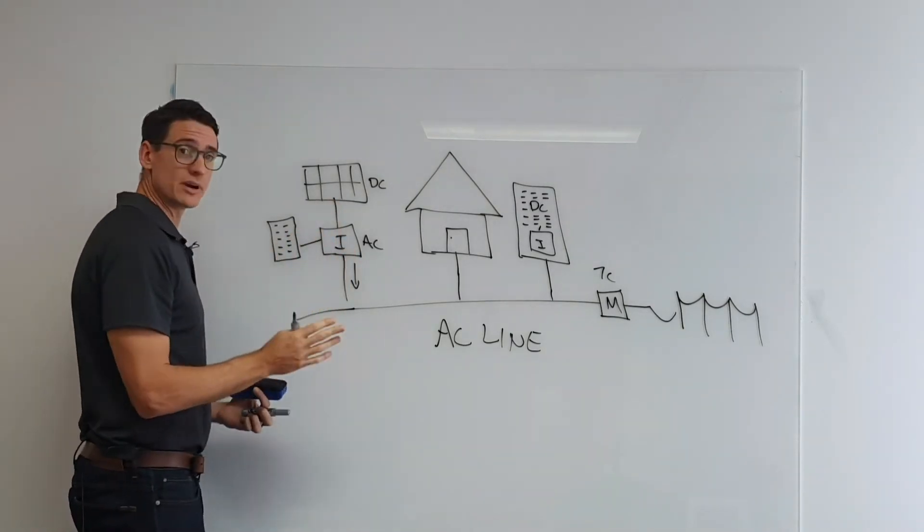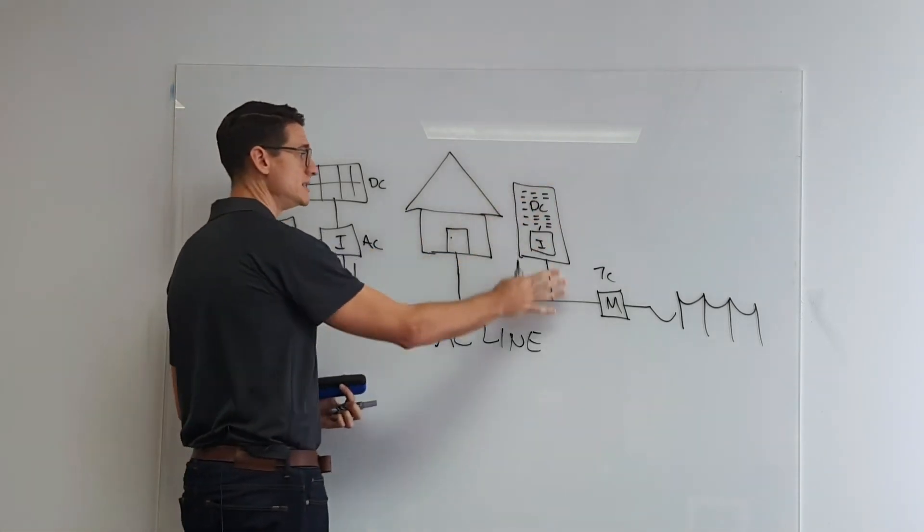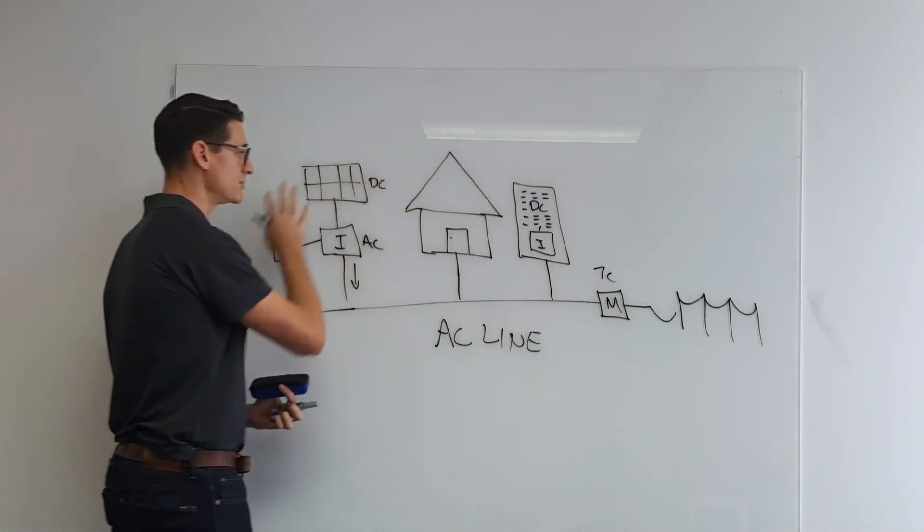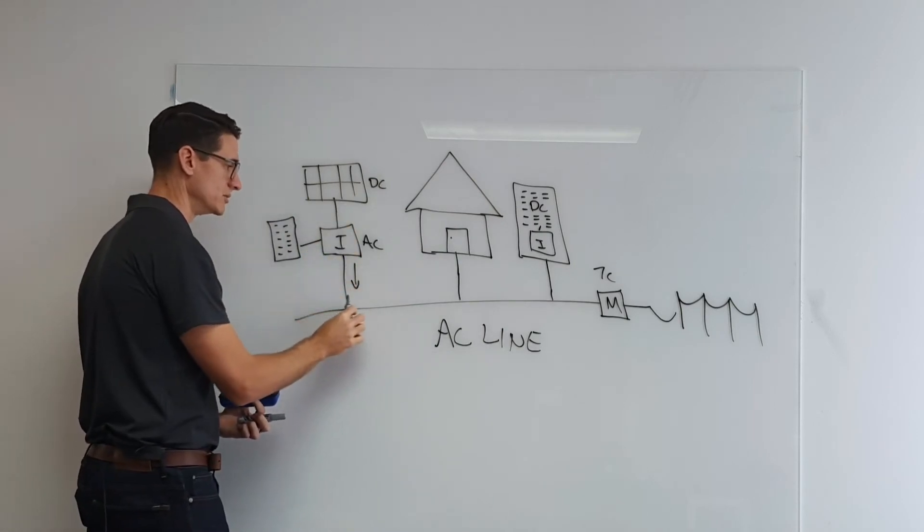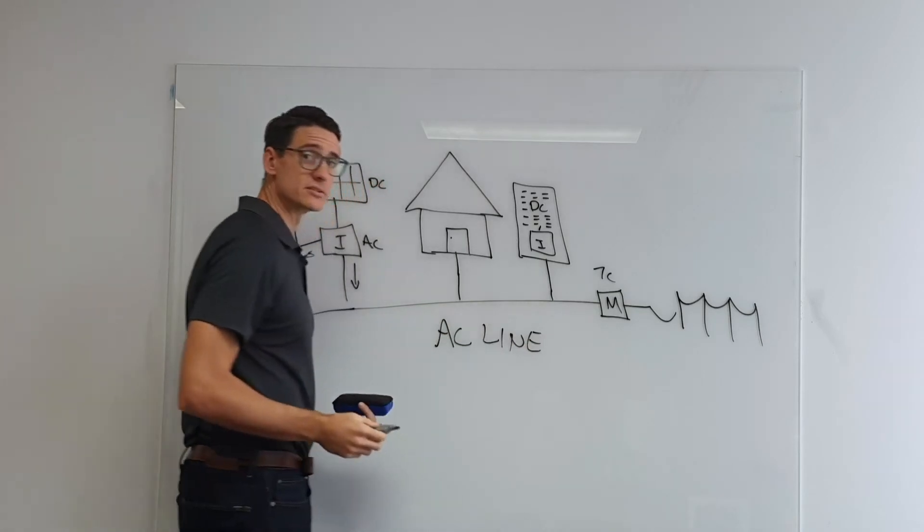Then again, in that situation, obviously if you were to have one of those products, you don't have an AC coupled battery, you have a DC coupled battery. So the energy then becomes available to the home, and what's left over is exported out to the grid.